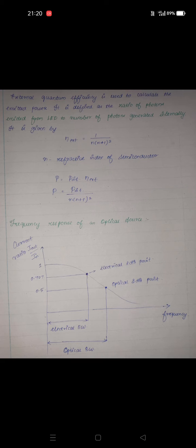The frequency response of an optical source is a plot of current ratio (I_out / I_in) versus frequency. When we plot these two parameters, we obtain a slope, with notable points at 1.0, 0.707 (which is 1/√2), and 0.5. This plot shows how fast the electrical signal changes the optical signal with respect to time.